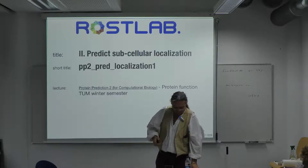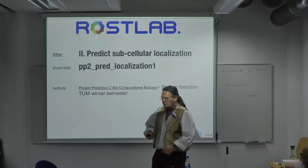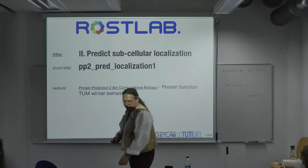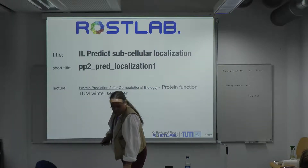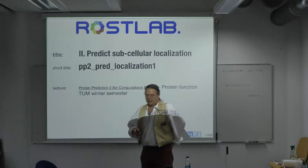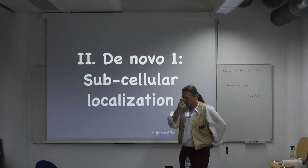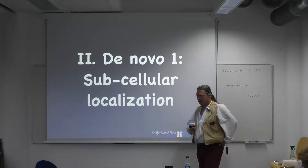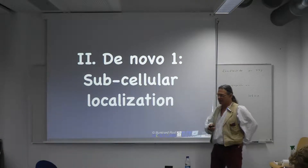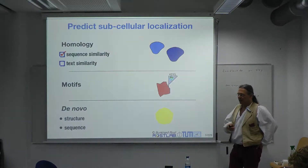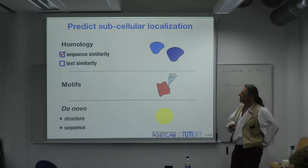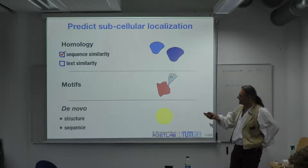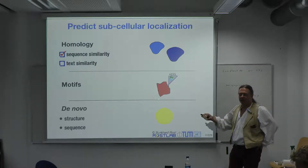Back to the issue of substandard realization prediction. I made a mistake. We spoke about sequence similarity and text similarity searches, but we did not cover the motifs, did we?